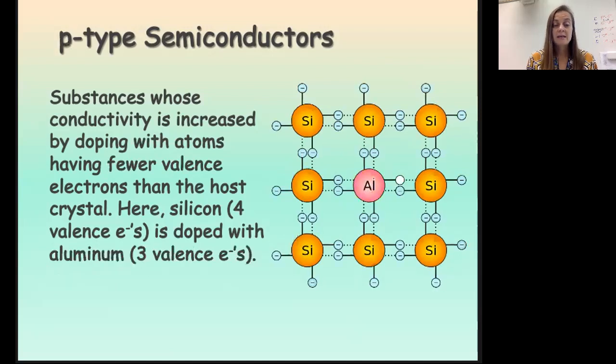We also have p-type semiconductors, and in a p-type semiconductor, we dope with an atom that has fewer electrons, and essentially you're creating a little hole there in the structure for electrons to flow through. P-type semiconductors we think of as positive semiconductors because they have fewer electrons, and they also increase conductivity.